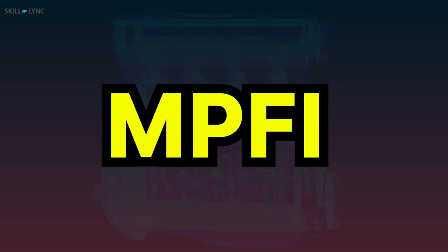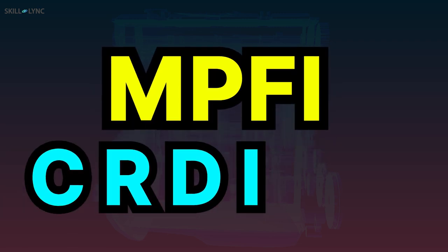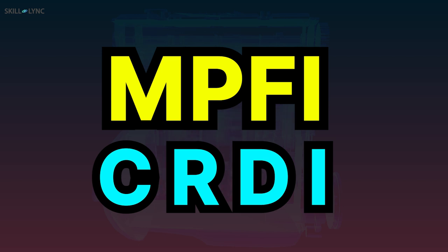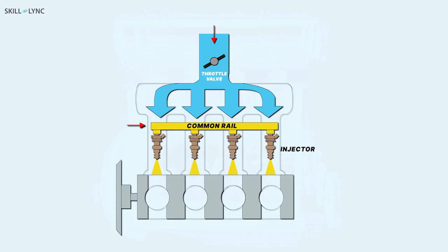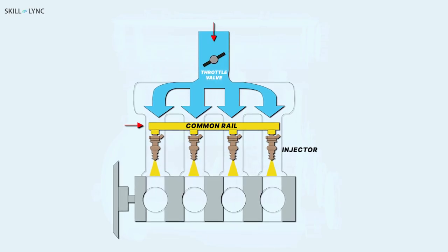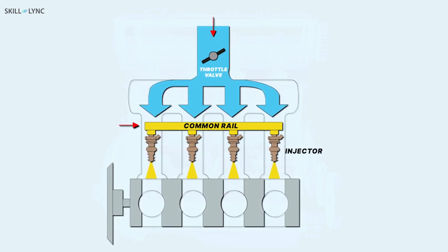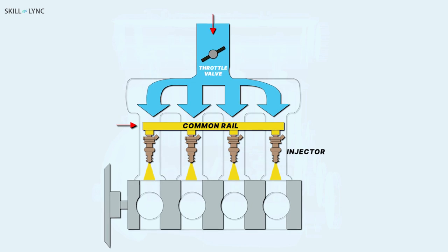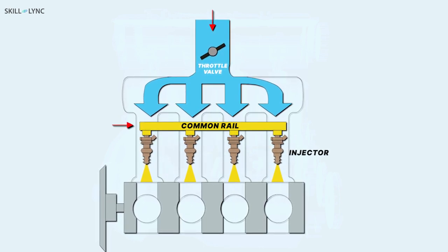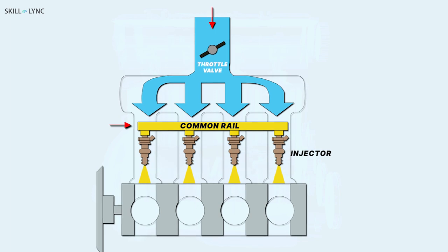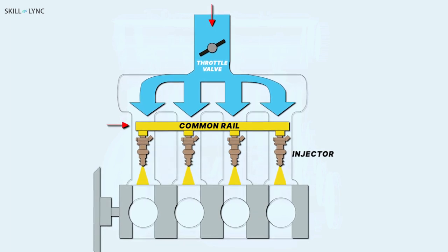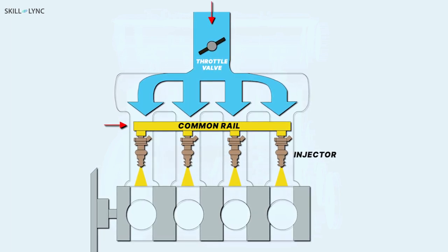The construction and working of the multi-point fuel injection system are almost similar to that of CRDI. In a multi-point injection system, each cylinder is provided with individual injectors and they are connected via a common rail. Here, the injectors are placed in the intake port near the intake manifold and so this injection system is also known as a port injection system.